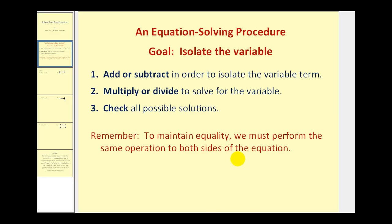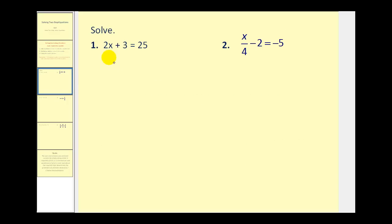So let's go ahead and take a look at some two-step equations. Number one: we have 2x + 3 = 25. The ultimate goal is to isolate the variable x on the left side of the equation, so we'd have something like x equals some number. Looking at the left side, we have this plus three and also this two that's attached to the x by multiplication.